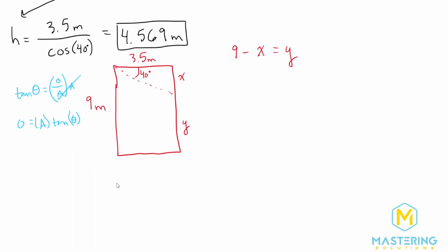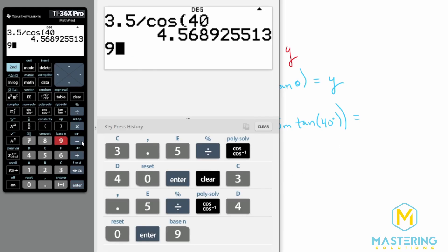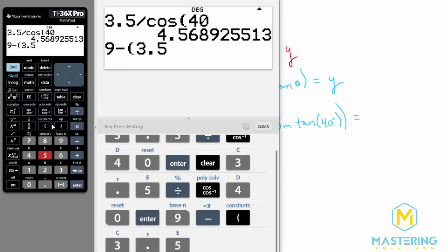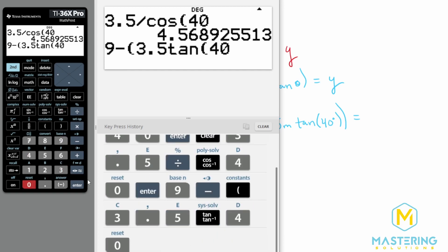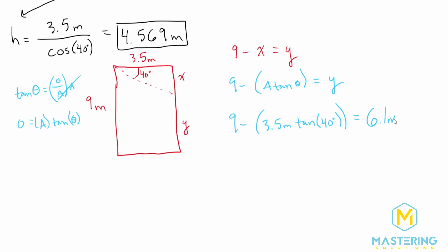So now we can plug that into our equation. So 9 minus adjacent tangent of the angle theta is equal to whatever y is. So now we can just plug in the numbers. So 9 minus the adjacent, which we said is 3.5 meters, times the tangent of 40 degrees will equal 9 minus 3.5 times the tangent of 40. So rounded, we have 6.1 meters above the ground.